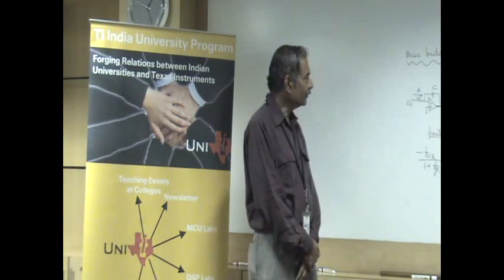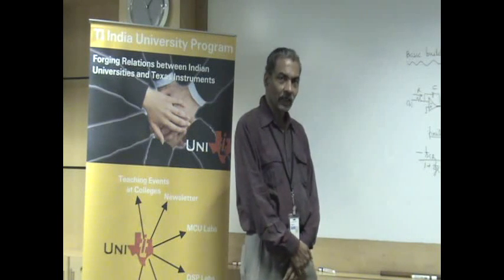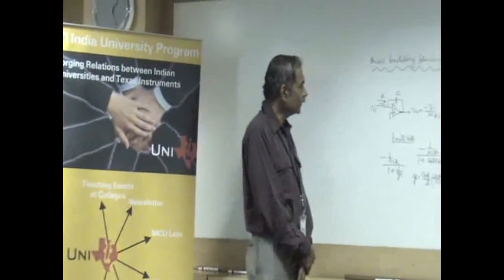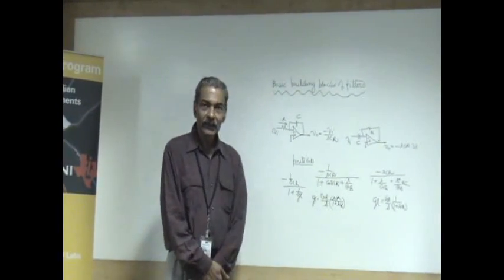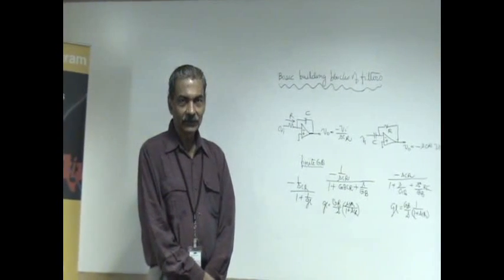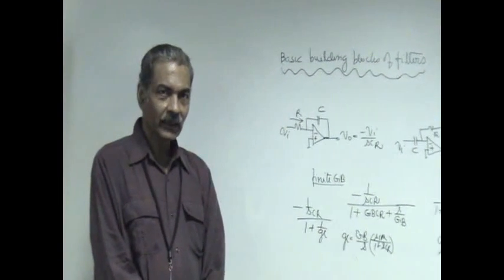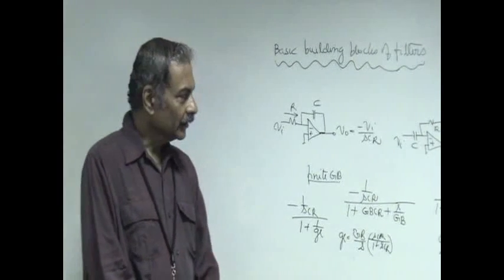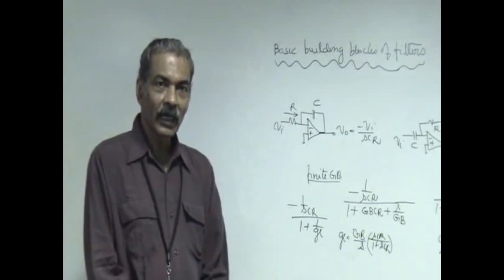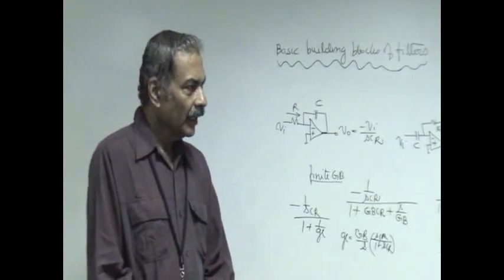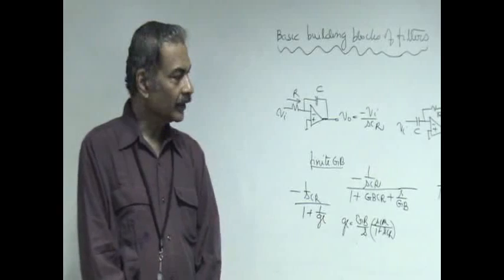As the third experiment, we are going to understand the utility of a basic building block made out of the op-amp, which is called an integrator, or another one called a differentiator. We have to find out which is superior in its application for building filters. Filters are essentially blocks which improve the signal-to-noise ratio, so that you can further process the signal with least effect from the noise. Such filters are nothing but differential equations solved essentially, and these differential equations can be solved by using either the integrator or the differentiator as the building block.